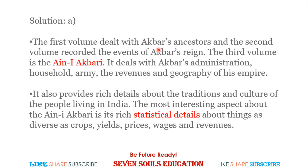The first volume of Akbar Nama deals with Akbar's ancestors. The second volume covers events of Akbar's reign — what events occurred during his rule. The third volume is called Ain-i-Akbari, which covers household, army, revenue, and geography of his empire. It provides rich details about traditions and culture of people living in India. The most interesting aspect of Ain-i-Akbari is its rich statistical detail — crops, yields, prices of that time, salaries, and revenue — all are given.